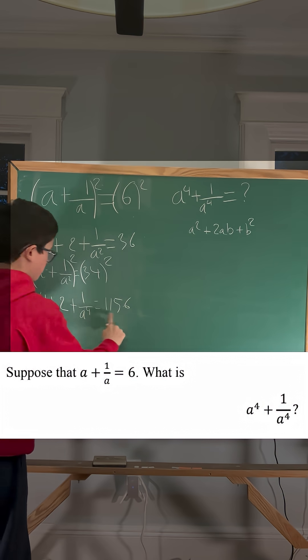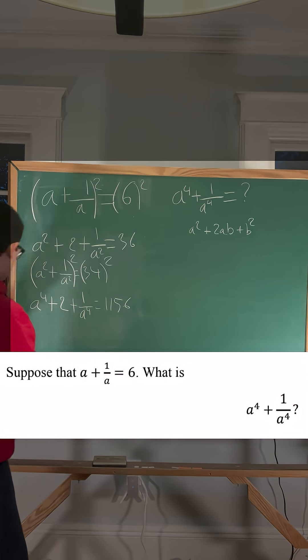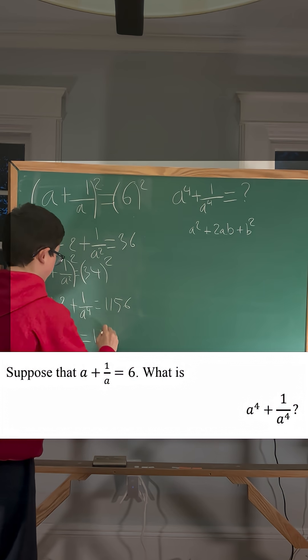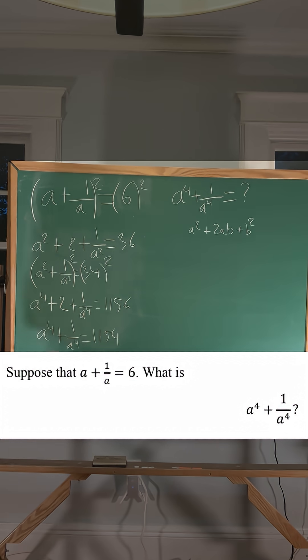Again, we're going to minus 2 on both sides to isolate the variables, so it would be a to the 4th plus 1 over a to the 4th equals 1,154, and we have our answer.